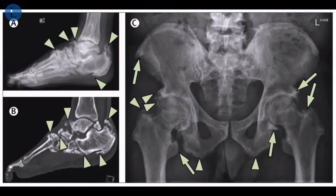The clinical picture is a composite of a lateral x-ray of the ankle in panel A, a CT scan of the ankle in panel B, and an AP x-ray of the patient's pelvis in panel C.